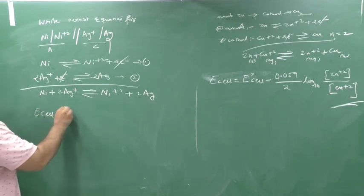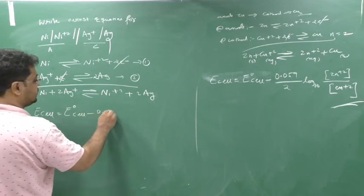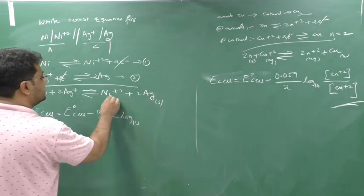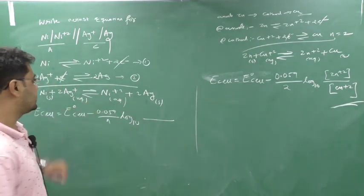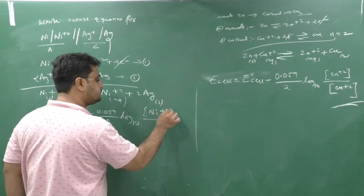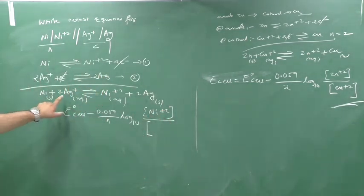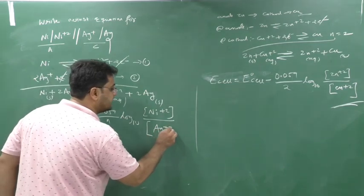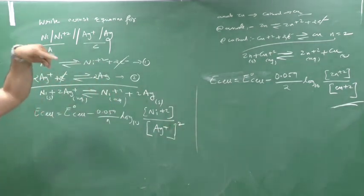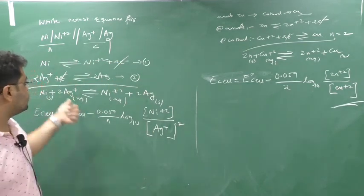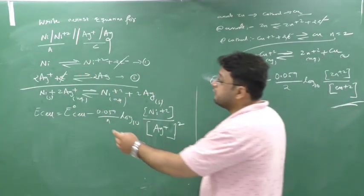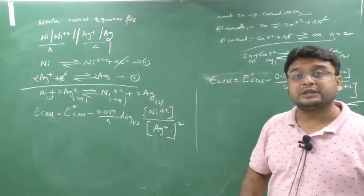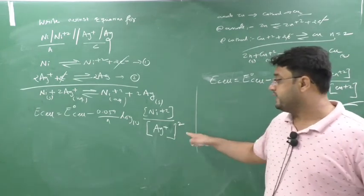Nernst equation for this cell: E cell = E° cell − (0.059/n) × log₁₀(concentration of products / concentration of reactants). Products: Ni²⁺ (aqueous) and Ag solid (concentration = 1). Reactants: Ni solid (concentration = 1) and Ag⁺ (aqueous). So: E cell = E° cell − (0.059/2) × log₁₀([Ni²⁺]/[Ag⁺]²). Important: since 2 appears before Ag⁺ in the reaction, it goes as a power (square) in the concentration term.